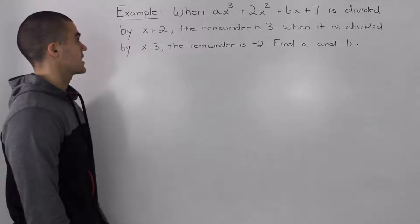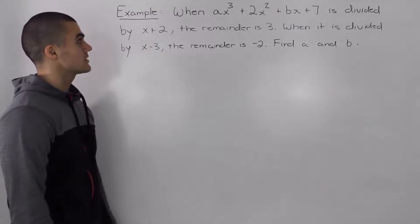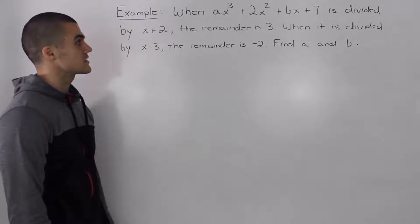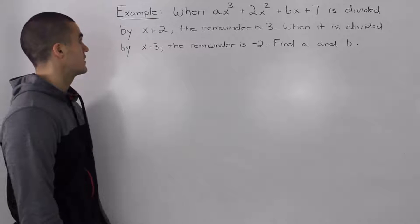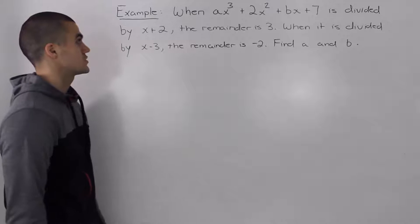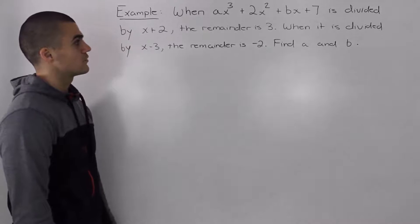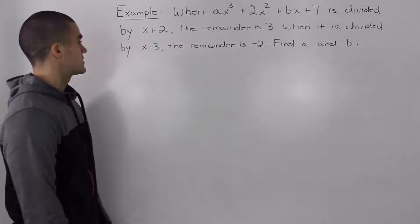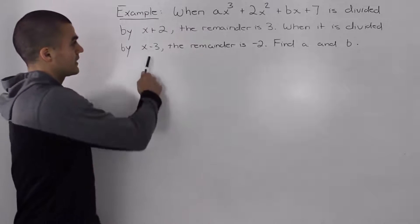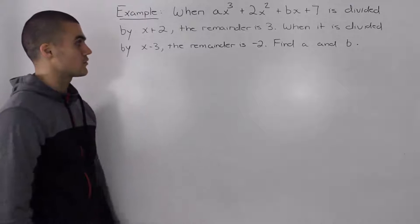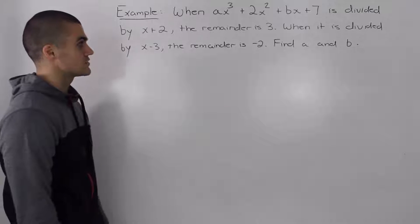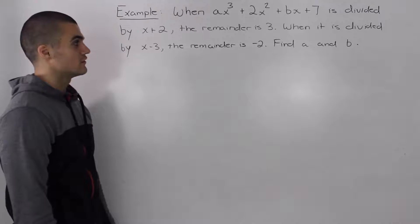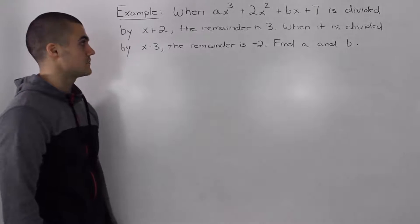Moving on to another example. When ax cubed plus 2x squared plus bx plus 7 is divided by x plus 2, the remainder is 3. When it's divided by x minus 3, the remainder is negative 2. Find a and b.